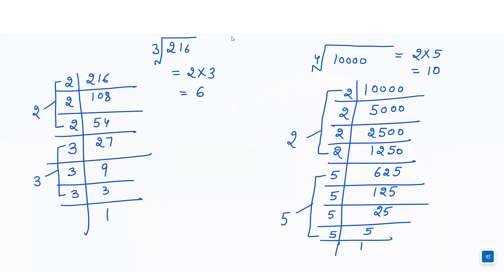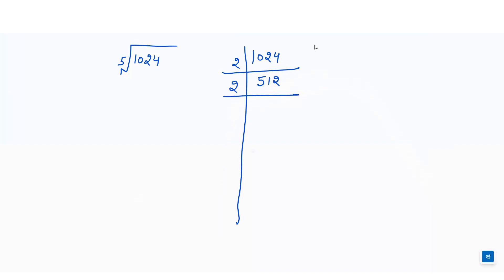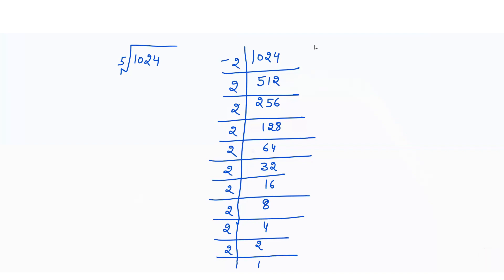Similarly, let's find out the 5th root of a number. The 5th root means we write 5, so we have to make sets of 5 same numbers. Let's find the 5th root of 1024 by finding its prime factors, dividing until we get 1. We make sets of 5 same numbers and write each number once. So the 5th root of 1024 is equal to 4.